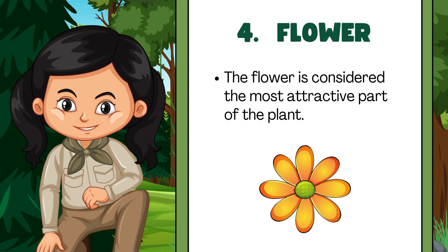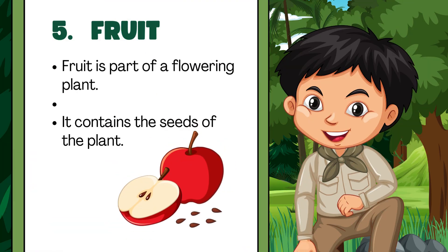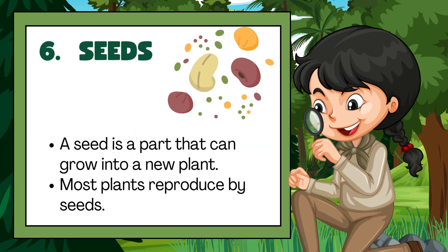4. Flowers. The flower is considered the most attractive part of the plant. 5. Fruits. Fruit is part of a flowering plant. It contains the seeds of the plant.